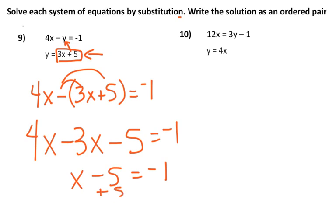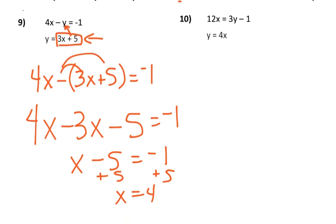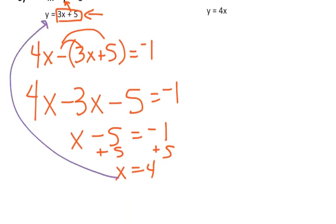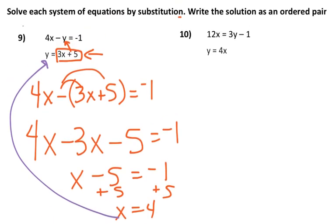I'm going to add 5 to both sides, and so x equals 4. Now I have to find out what y is, so I'm going to take the x equals 4, and I'm going to plug it back in right there. So y equals 3 times 4 plus 5, so that's 17. So my solution is 4, 17.